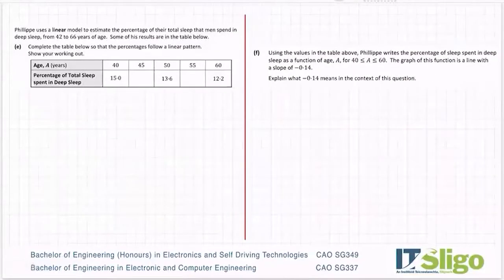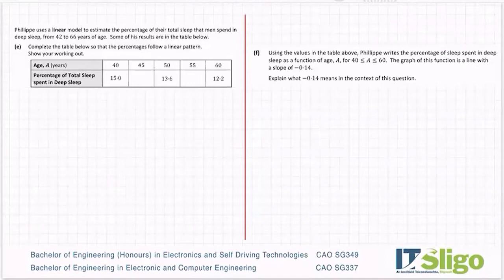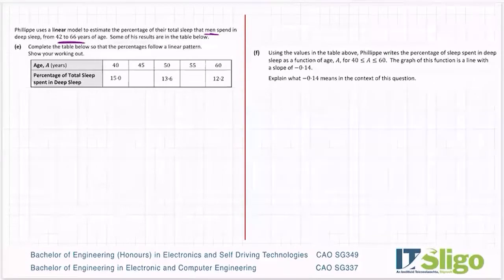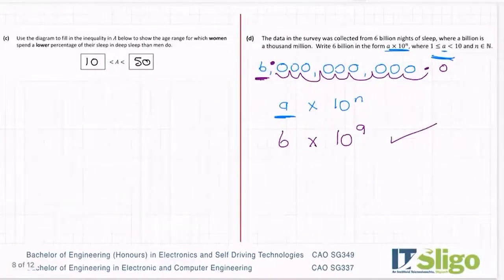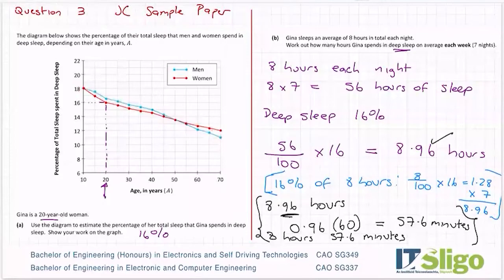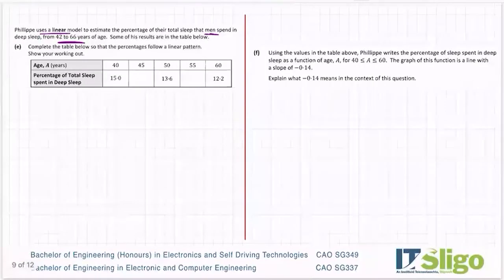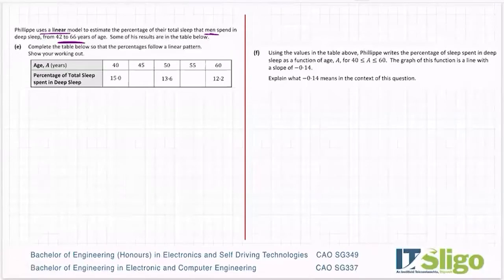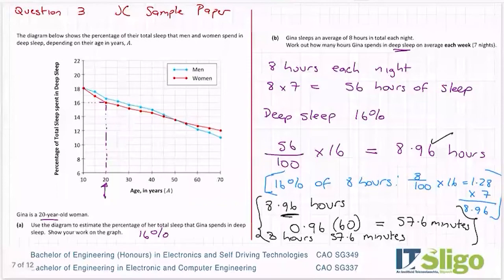Part E: Philippe uses a linear model to estimate the percentage of sleep men spend in deep sleep from age 42 to 66. Some results are in a table — complete the table so the percentage follows a linear pattern. When it says 'linear model', it means treating the blue line as a straight line — a line of best fit.